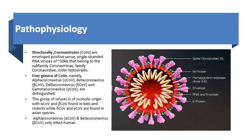Structurally, the coronavirus is an enveloped positive-sense single-stranded RNA of size 30 kilobase, belonging to the family Coronaviridae, distinguished as four genera: namely alpha-CoV, beta-CoV, gamma-CoV and delta-CoV, out of which the alpha and beta-CoV are found to infect humans.